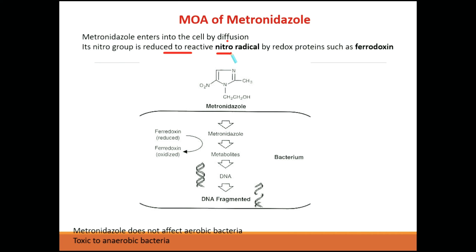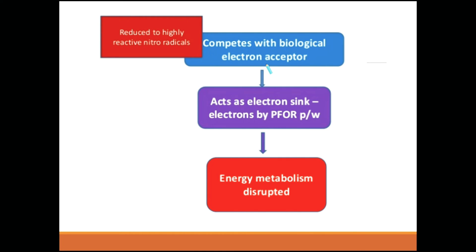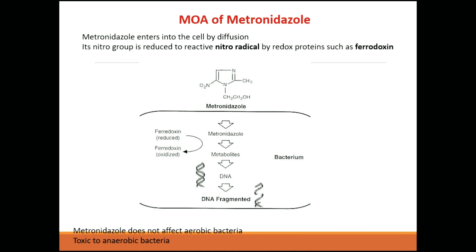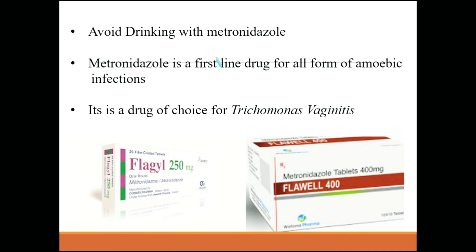Inside the cell, it is converted to a nitro radical. It will compete with the electron acceptor and act as an electron sink. It acts on PFOR — Pyruvate Ferredoxin Oxido-Reductase — in the electron transport chain, disrupting energy and metabolism. Alcohol consumption should be avoided with this drug. It is a first-line drug for all amoebic infections and the drug of choice for Trichomonas vaginalis infections.